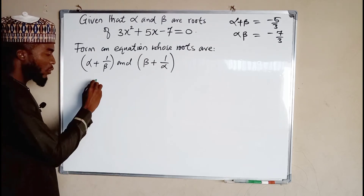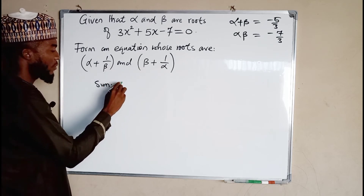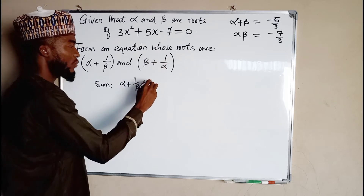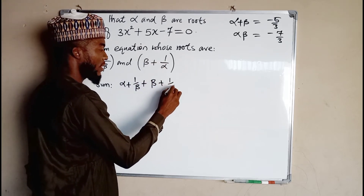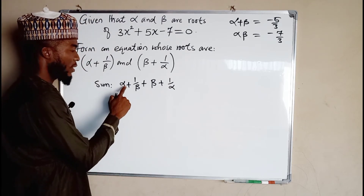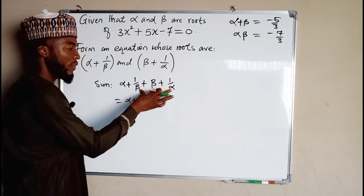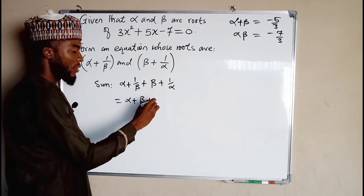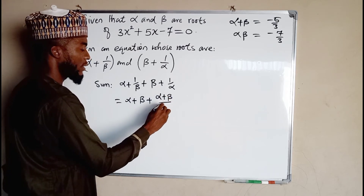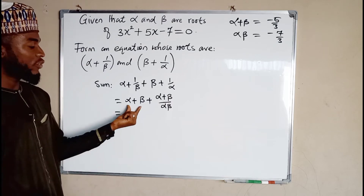For the sum, we should add the two roots together: we have (alpha + 1/beta) plus (beta + 1/alpha). This is equal to alpha plus beta, then plus the remaining terms. If you add them together you obtain alpha plus beta, plus 1/beta plus 1/alpha — which simplifies to alpha plus beta, plus (alpha plus beta) over (alpha times beta).